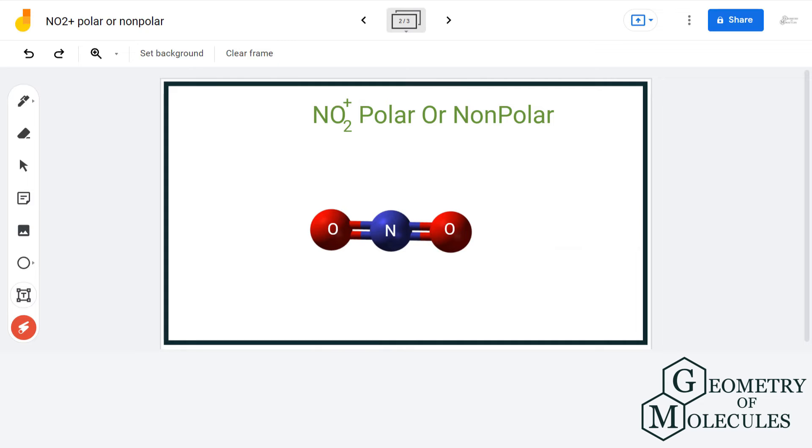Here, the electronegativity of oxygen is much greater than that of nitrogen, which makes the individual nitrogen-oxygen bonds polar, and the dipole moment will be in the direction of oxygen.